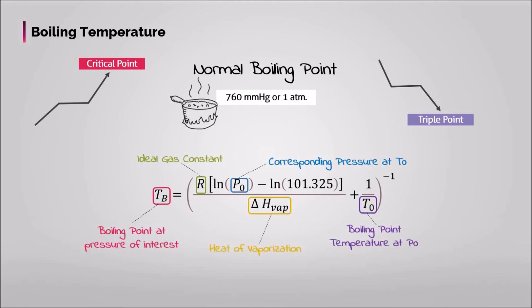Where Tb is the boiling point at the pressure of interest, R is the ideal gas constant, P is the vapor pressure of the liquid at the pressure of interest, Po is some pressure where the corresponding To is known.